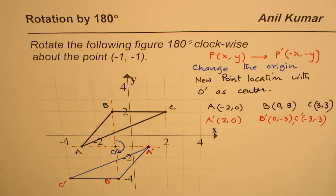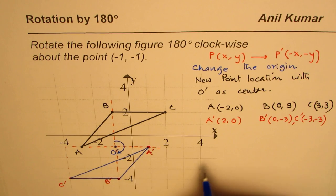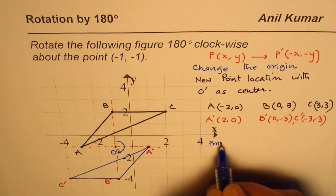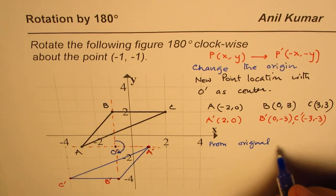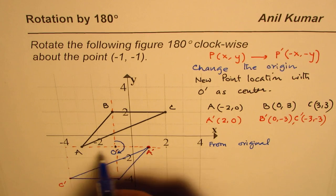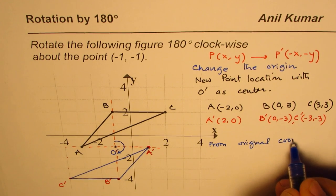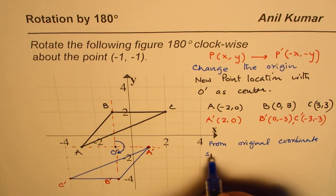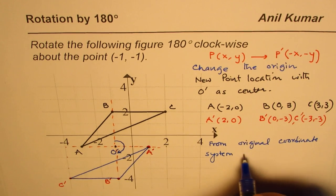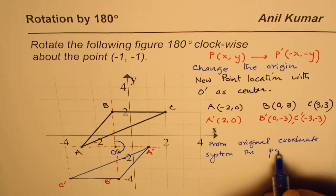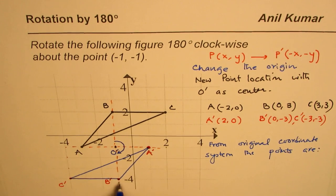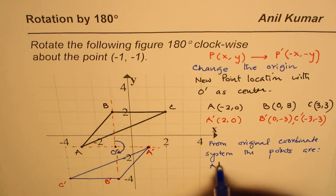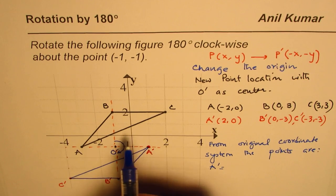you can do it. Now you can read your image points from the original coordinate system. We can rewrite these points. Point A' is